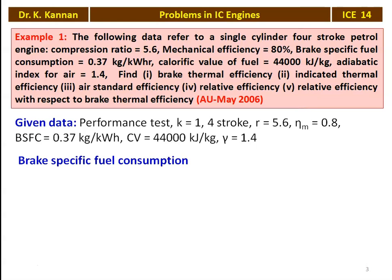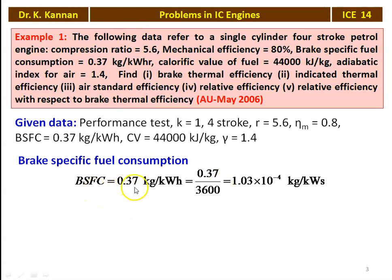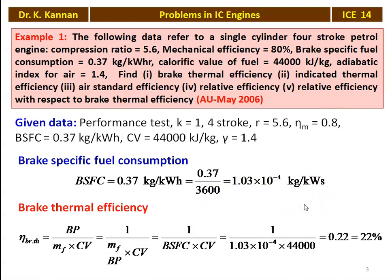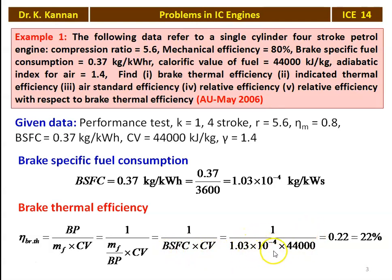First we calculate the brake thermal efficiency. Brake specific fuel consumption is 0.37 kg/kWh, which is 0.37 divided by 3600 = 1.03 × 10⁻⁴ kg/kWs. Brake thermal efficiency is defined as brake power divided by mass of fuel times calorific value, which equals 1 divided by BSFC times CV = 1 divided by (1.03 × 10⁻⁴ × 44,000) = 0.22, which is 22%.